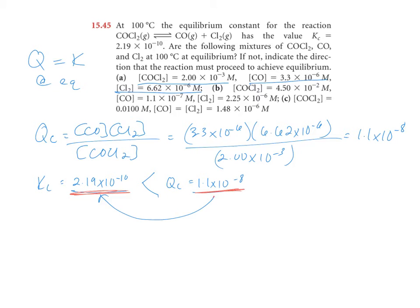We want this 10 to negative 8 to go down to 10 to negative 10. So if we look at our fraction, in order to get this value to equal this one, to go down, my denominator must increase, and my numerator must decrease. So in terms of the balanced chemical equation, that means your reactants must increase, and your products must decrease.